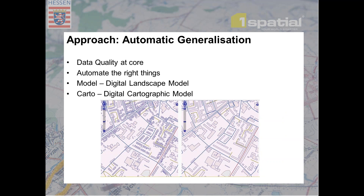One Spatial's approach to generalization has data quality at its core. This ensures that the data is fit for automation, enables automated fix-up, and by having those two things in place, we can also identify non-conformances to drive operators to locations where edits need to be undertaken. We then look to automate the right things — starting with the biggest wins, not the corner cases — and look to reduce manual edits to enable more frequent releases. We build a Digital Landscape Model (DLM) first, followed by the Digital Cartographic Model (DCM).